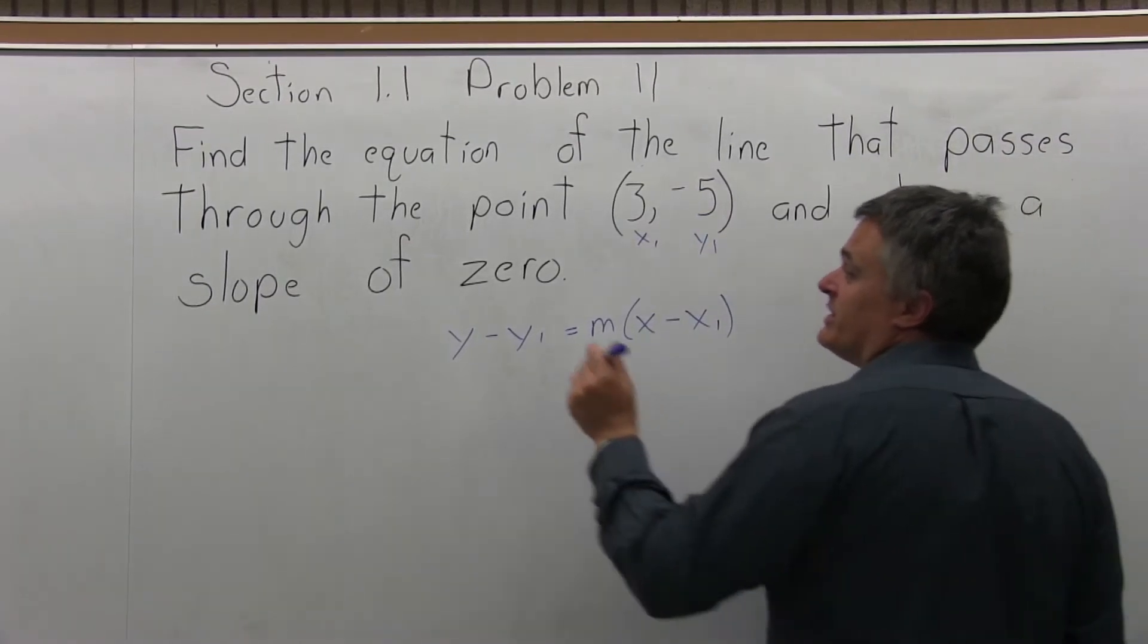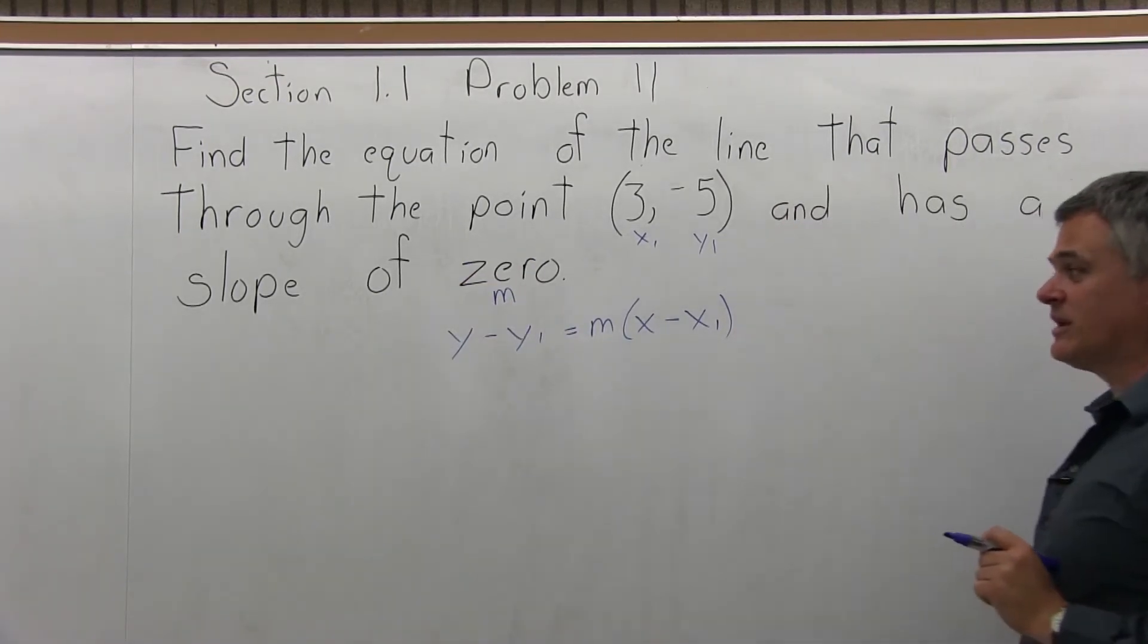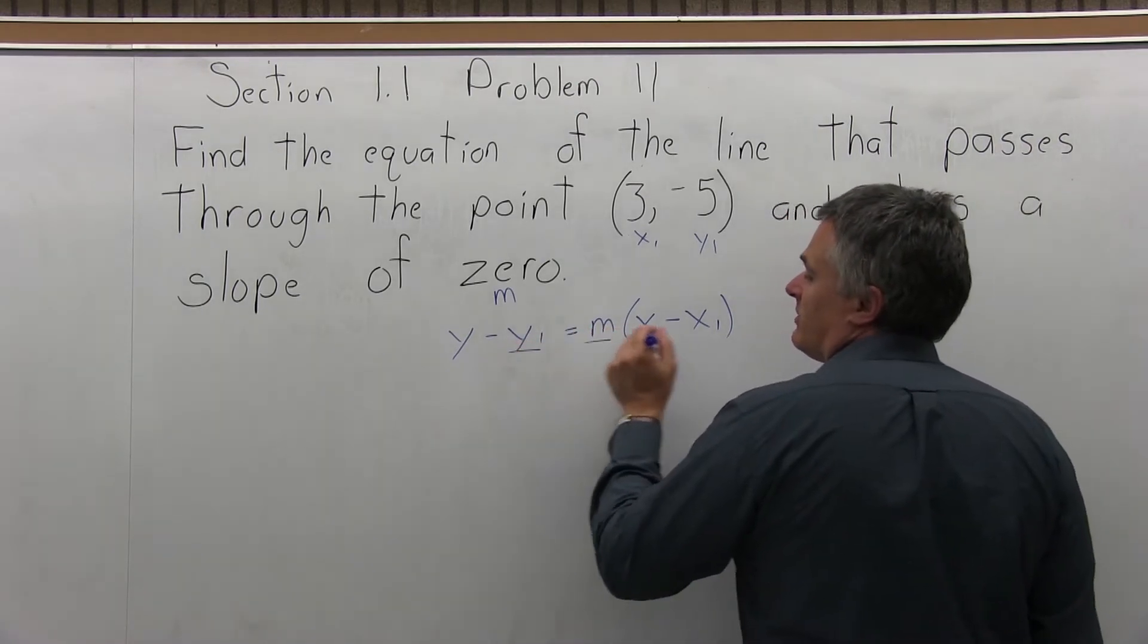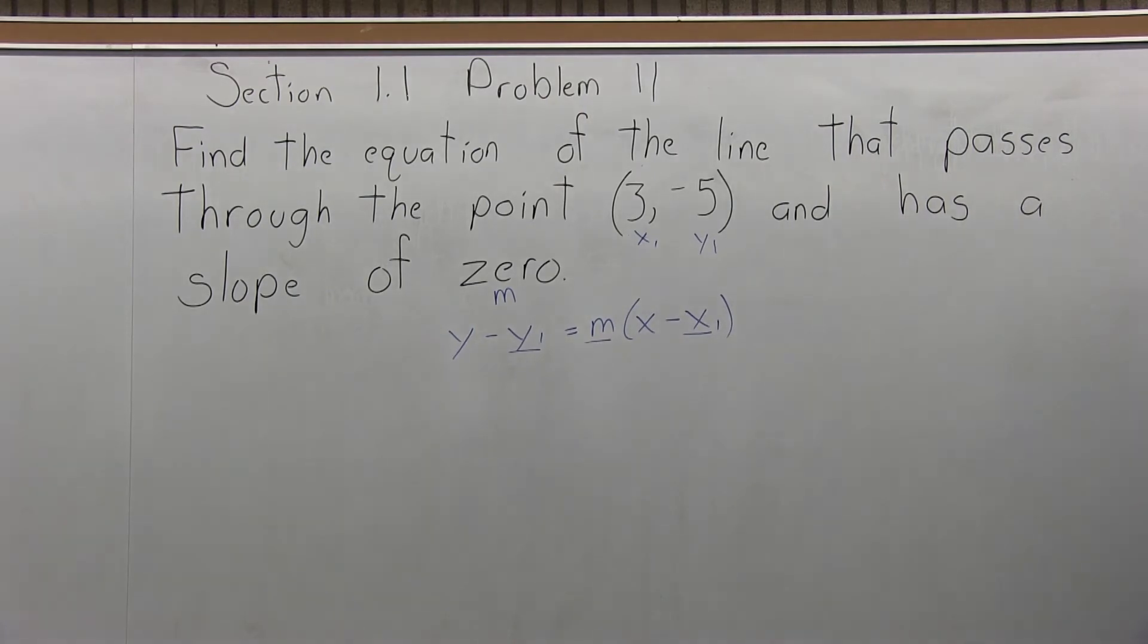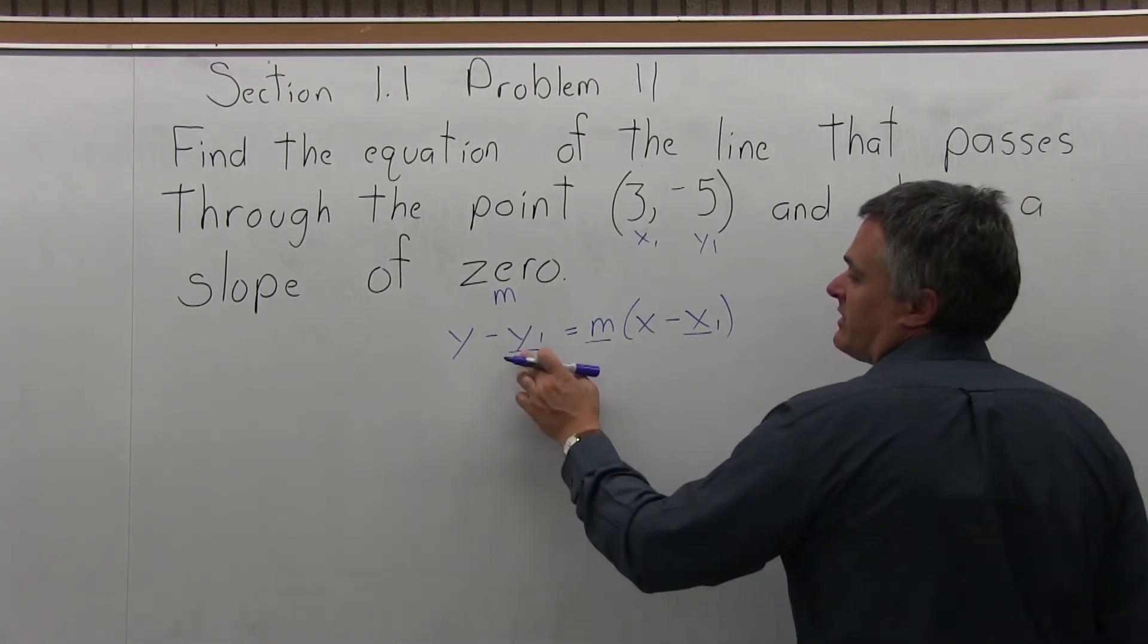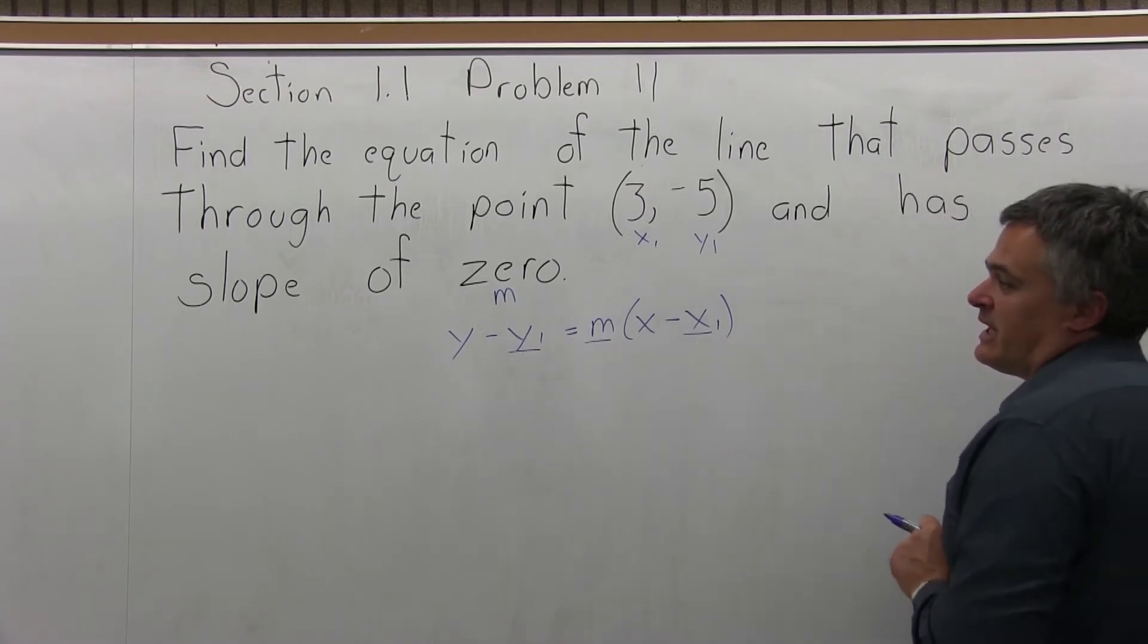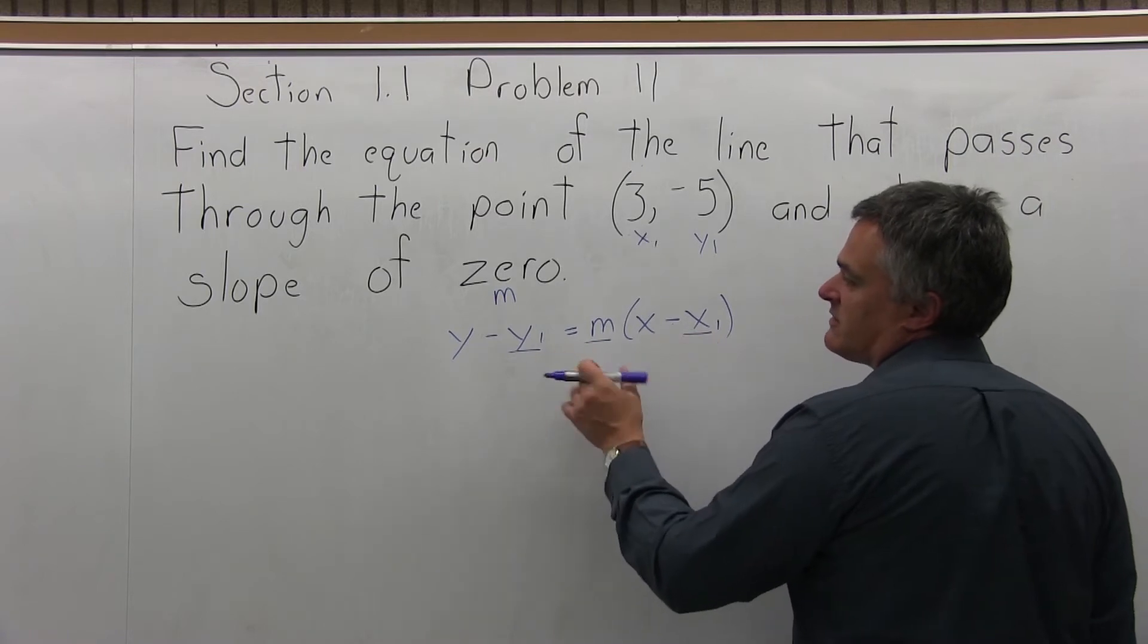The slope is 0, means that m has a value of 0 as we fill in the formula. The formula, essentially half of it stays and the other half you have to put in a number value for. I underline the y1, the m, and the x1 in my equation of a line formula. Those values will have to have a number value put in for them and the rest of it can stay.